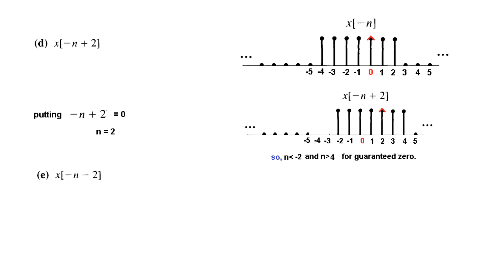And finally, this signal, again, same, we will be using this. From here, we can find that putting equal to 0, n is equal to minus 2. That means we have to move it in a manner that this hat signal comes to point minus 2. As shown here, hat has come to minus 2. And now we can see that for n less than minus 6 or n greater than 0, the signal is guaranteed to be 0. So less than minus 6 and greater than 0.